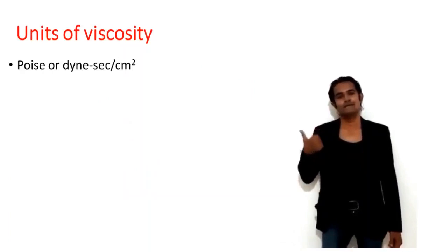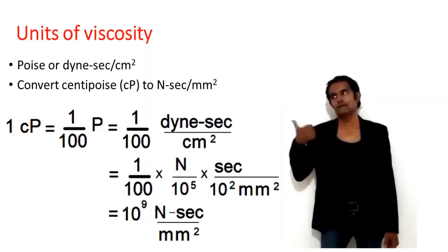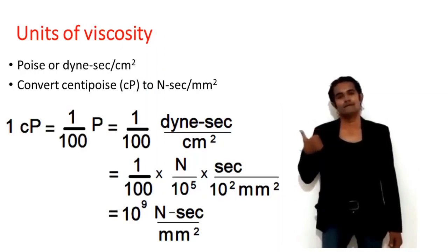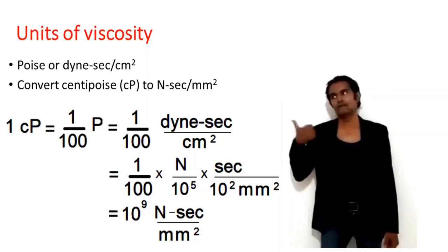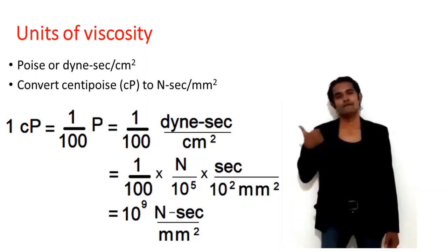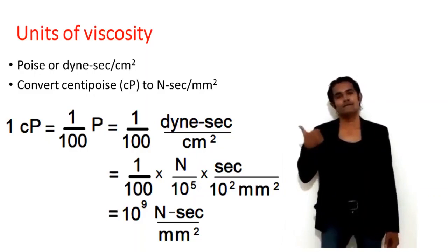Viscosity is also determined in poise or dyne-seconds per centimeter squared, so we need to convert centipoise to Newton-seconds per mm squared. One centipoise equals one-hundredth of a poise. Poise is also called dyne-seconds per centimeter squared. The conversion gives one-hundredth multiplied by Newton-seconds divided by 10 to the power 5, over 10 squared mm squared, resulting in 10 to the power of 9 Newton-seconds per mm squared.